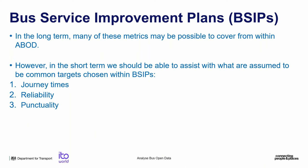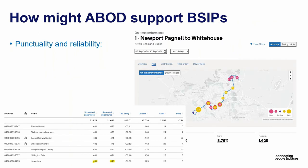In the longer term, many of those metrics may be possible to cover within analyse bus open data. In the shorter term, we want to focus on the more common metrics likely to be chosen for monitoring within these plans — things like journey times, reliability and punctuality. For punctuality and reliability, using the existing features you can see at a service level and stop level things like the number of scheduled departures versus actual recorded departures, and start to see if routes were not served with the expected number of services. You can also use the map-based functionality to explore this on a geographical level.